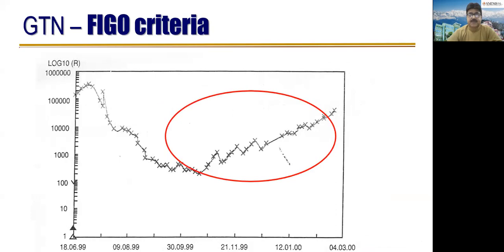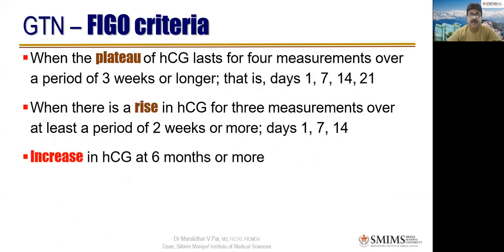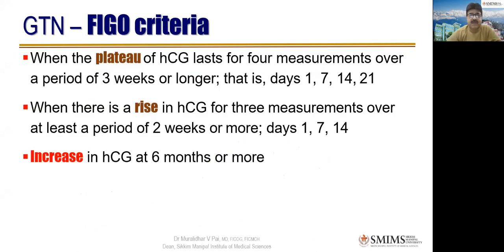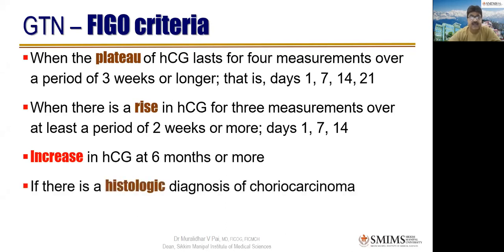Additionally, an increase in hCG at six months or more after molar evacuation — where hCG came down then starts rising again after six months — is also considered GTN. To summarize the three criteria: plateauing of hCG for four measurements over three weeks (day 1, 7, 14, 21); a rise for three measurements over two weeks (day 1, 7, 14); or a rise after six months. Histologic diagnosis of choriocarcinoma also confirms GTN.